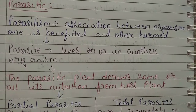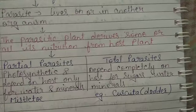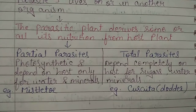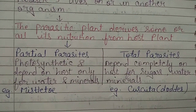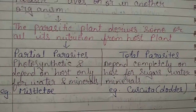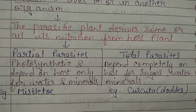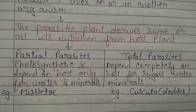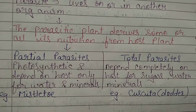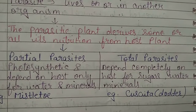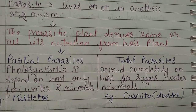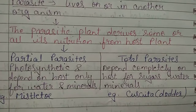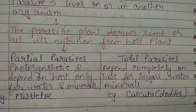Depending on this, they are further divided into partial parasites and total parasites. Partial parasites are photosynthetic — they are able to photosynthesize and synthesize their own food, but they depend on the host for water and minerals. Total parasites completely depend on the host plant for all nutrients — sugars, water, and minerals. An example of a partial parasite is mistletoe, and an example of a total parasite is Cuscuta, also known as dodder.